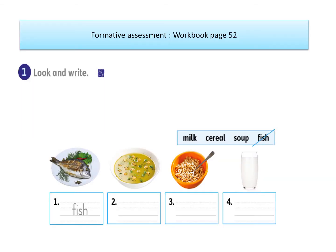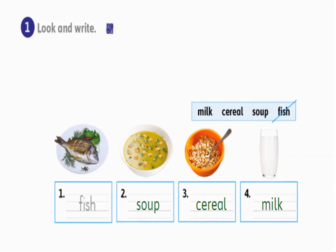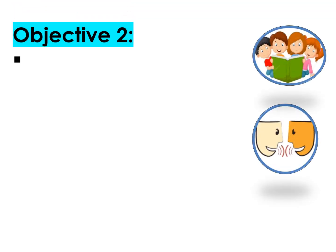Now we come to formative assessment, workbook page 52, 'Look and write.' Let us read the words in the box: milk, cereal, soup, fish. Number one: fish. Write the right word in the quiet space. Have your time. Let me check your answers: number one, fish; number two, soup; number three, cereal; number four, milk. Objective number two has been done correctly.